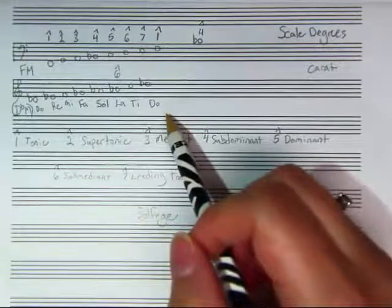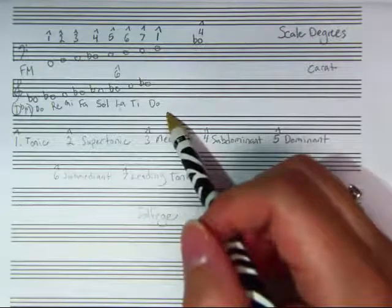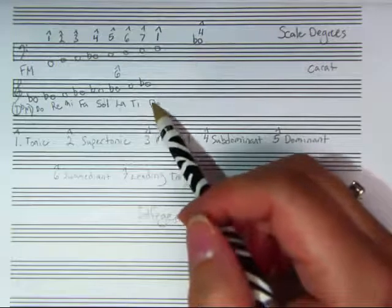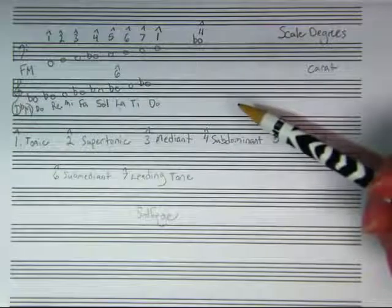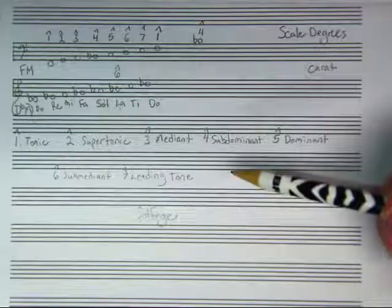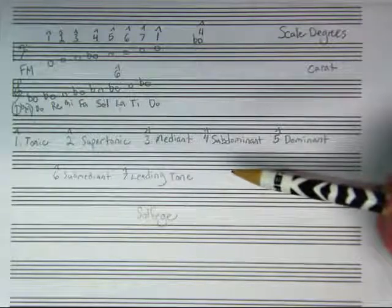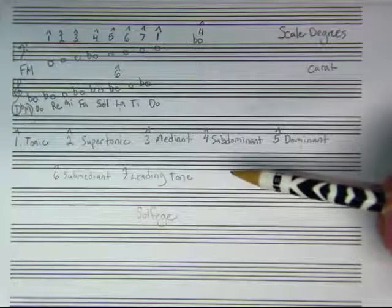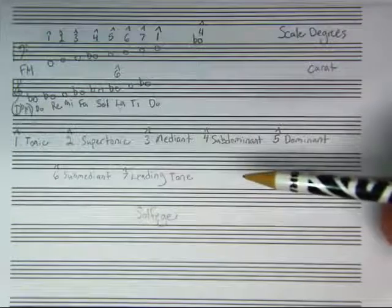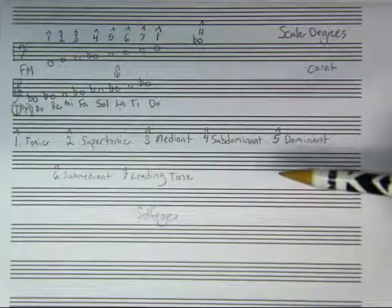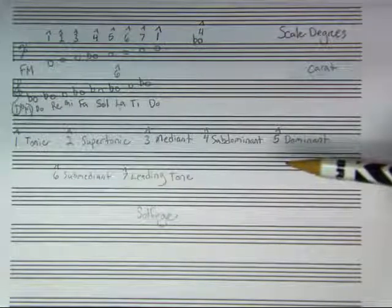So sometimes people use these terms interchangeably. Like they might say, oh, look at the tonic pitch. Or, oh, look, it's Do. Or did you hear scale degree one there? And that all means D-flat if you're in the key of D-flat major. So there are different times when these different labels are useful. But it's good for you now to know what all of them are. To be able to say them and spell them correctly. So that you can have conversations with other people that know about music. And be able to communicate how things are working in any piece that you're playing.